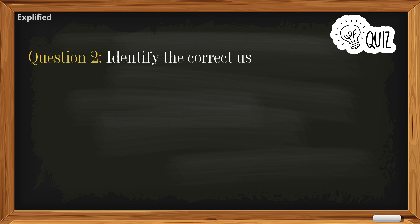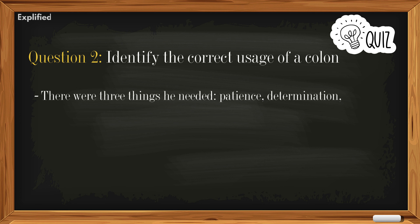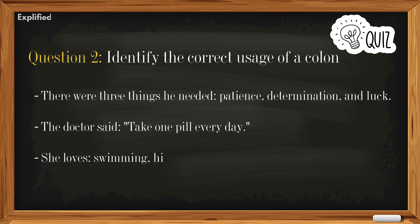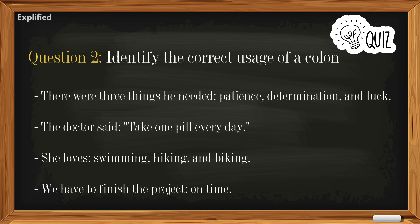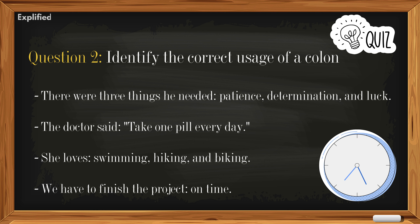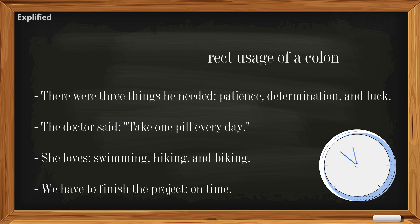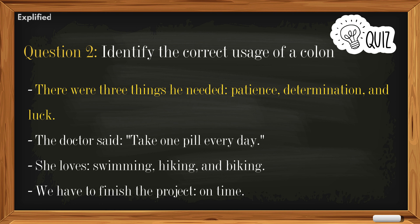Question two: Identify the correct usage of a colon. A) There were three things he needed: patience, determination, and luck. B) The doctor said, take one pill every day. C) She loves swimming, hiking, and biking. D) We have to finish the project on time. Answer: A) There were three things he needed: patience, determination, and luck.